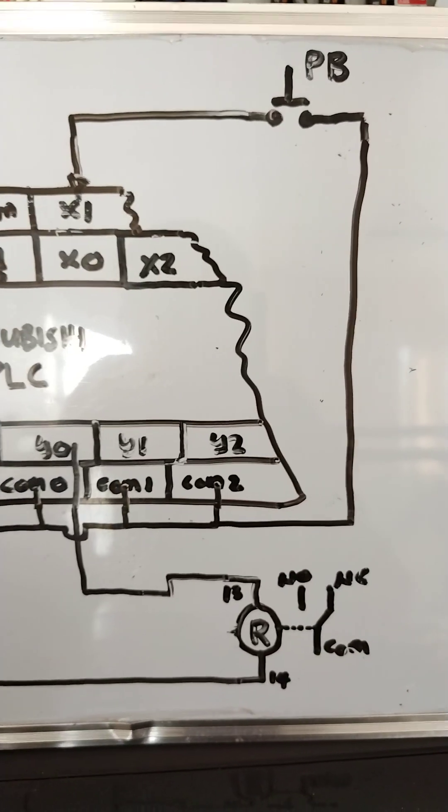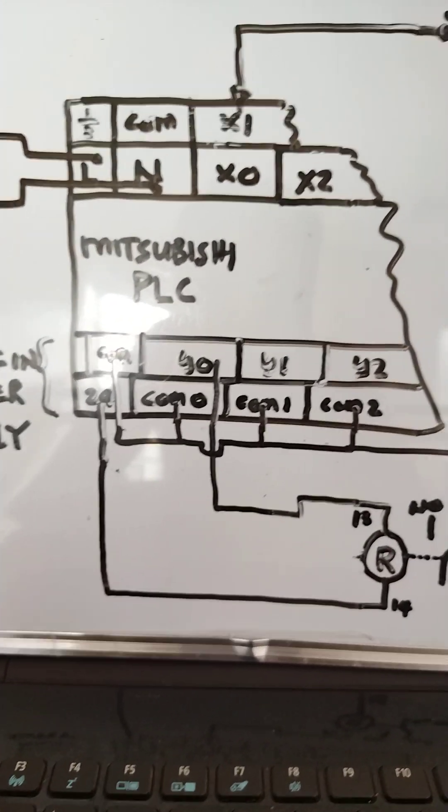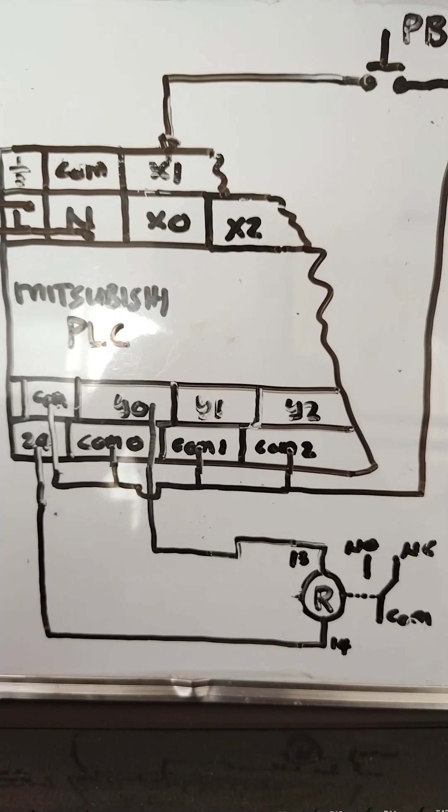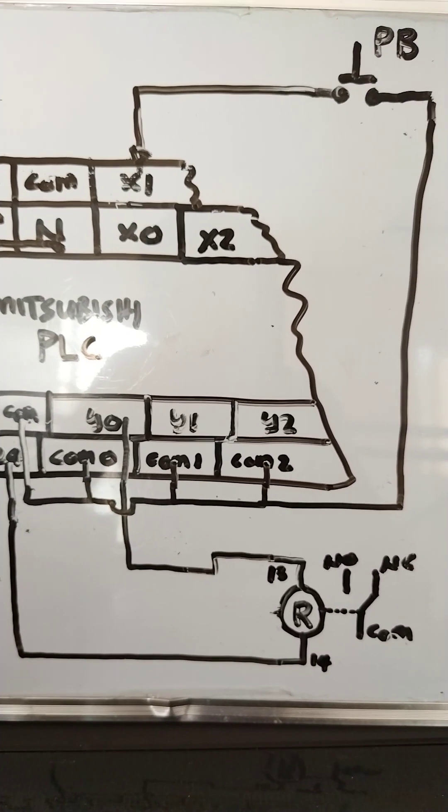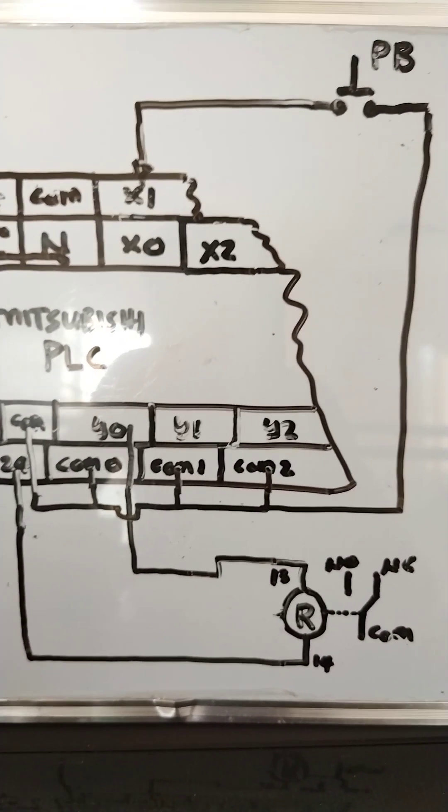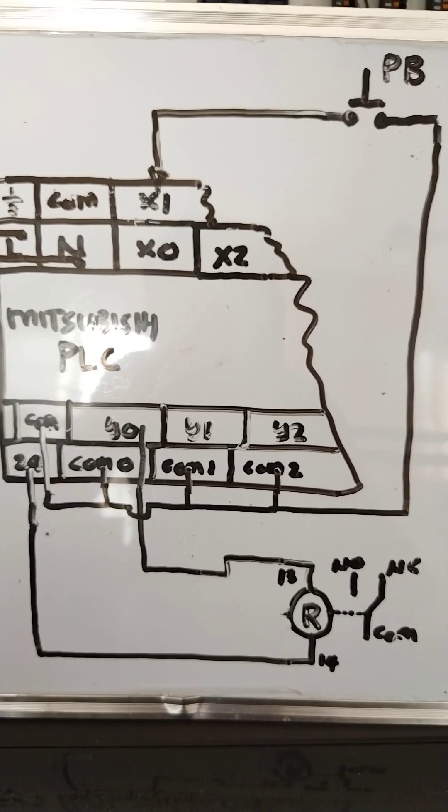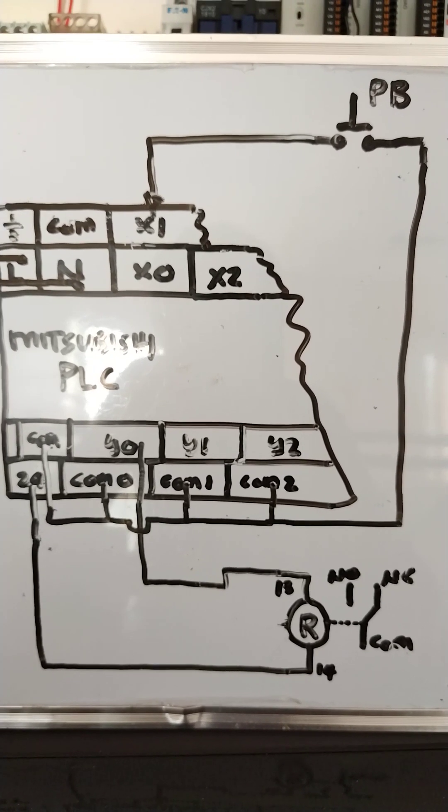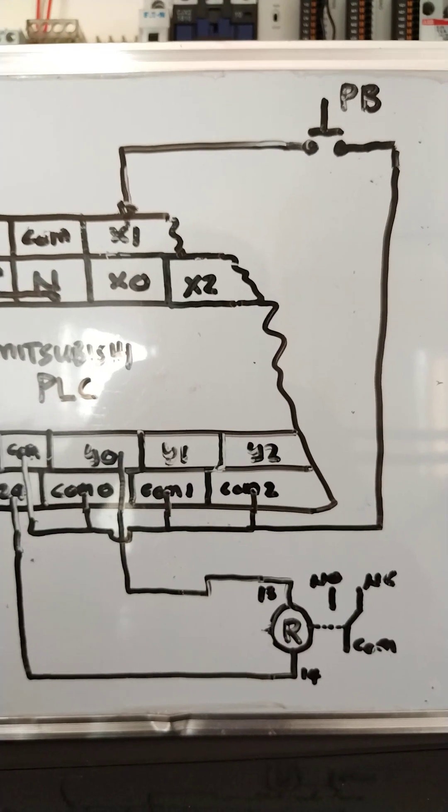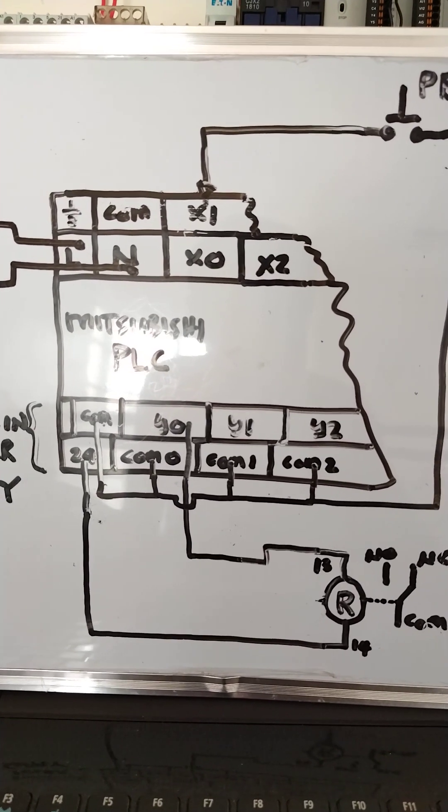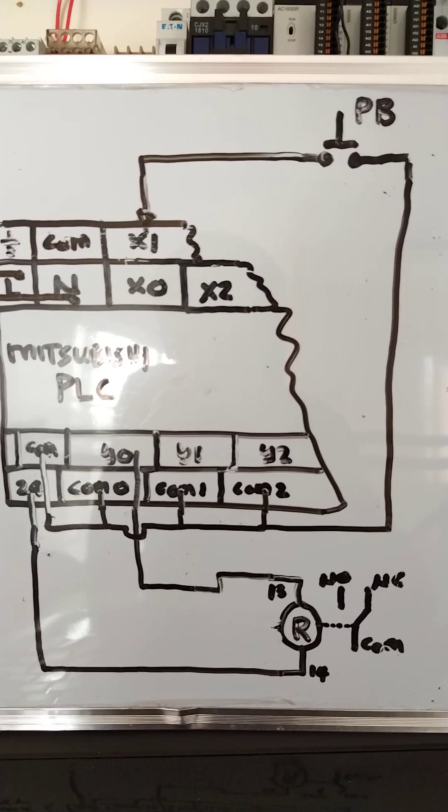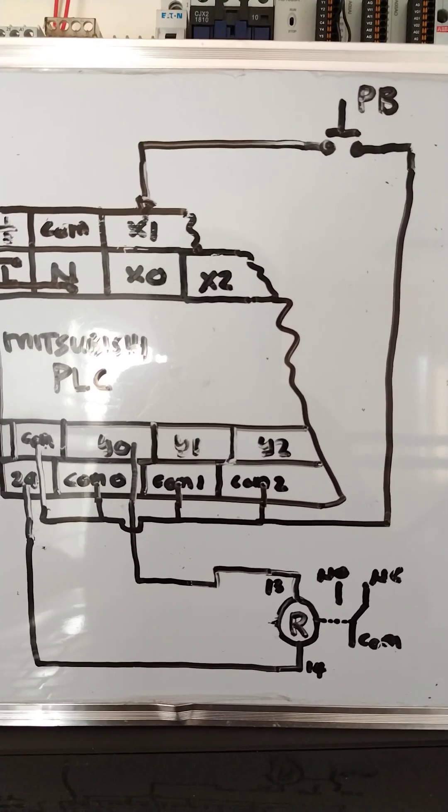Okay, so once again the negative 24 volts or the common will be the one to trigger the input, so make sure you are wiring the inputs in this fashion. Now for some other PLC it may be different, but make sure to check first which one. So for this, several Mitsubishi PLC that are made in Japan, the negative 24 volts or the common will be the one to trigger your input channel or input port.